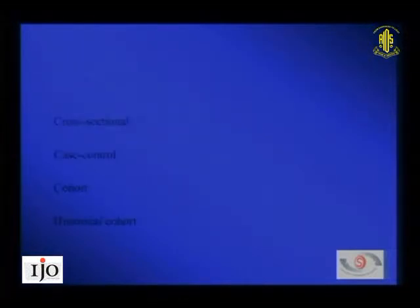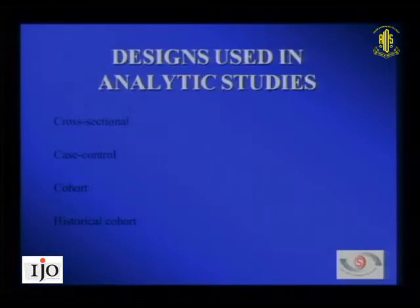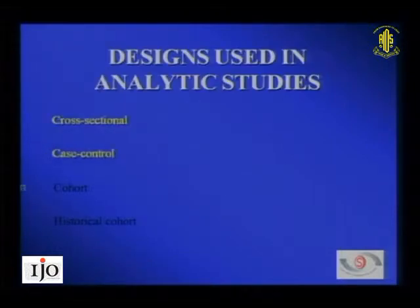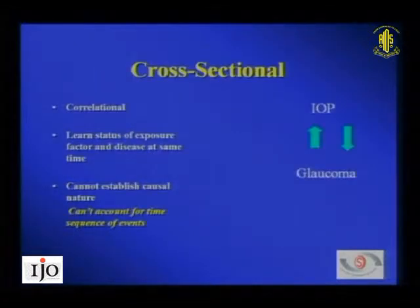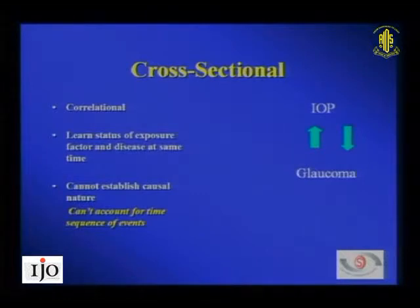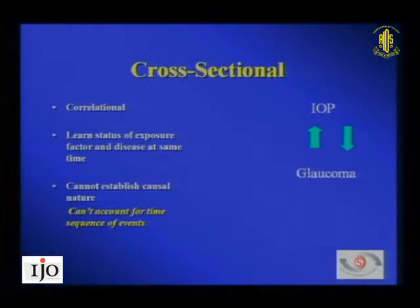Broadly, we have analytic study designs: cross-sectional, case control, cohort — which includes prospective cohort and historical cohort — and RCT. We'll try to cover each study design in isolation. A cross-sectional study is correlational — we take a certain number of people and see what we are looking for, for example, out of 100 people, how many have diabetes or glaucoma.